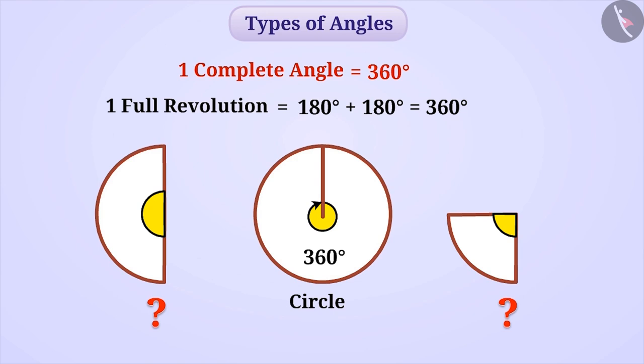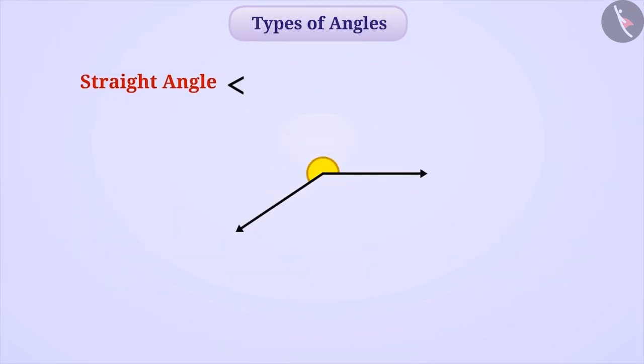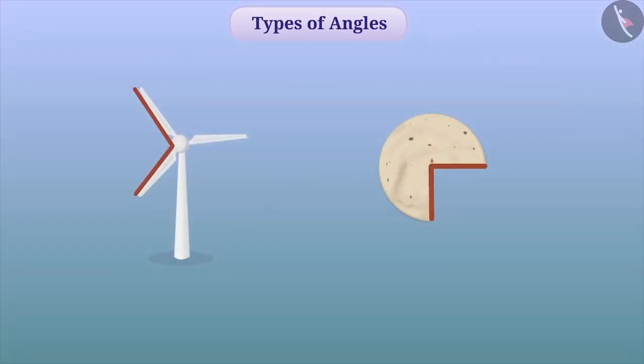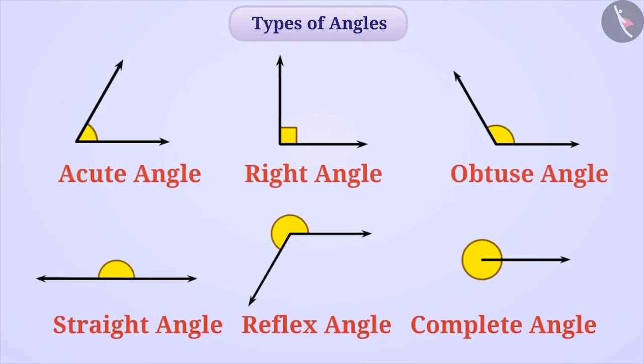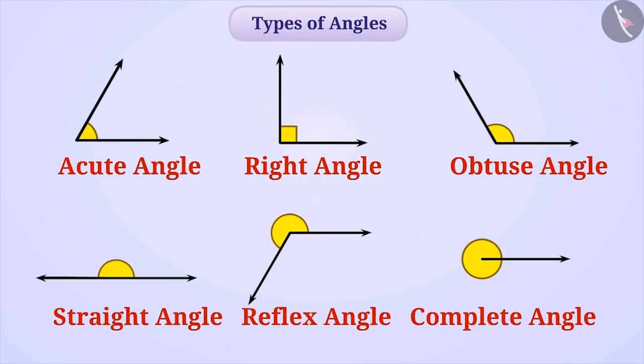Now if we look here, the angle shown here is greater than a straight angle but smaller than a complete angle. We call such an angle as a reflex angle. Some of the situations of a reflex angle are as follows. So now, you must have understood different types of angles properly.